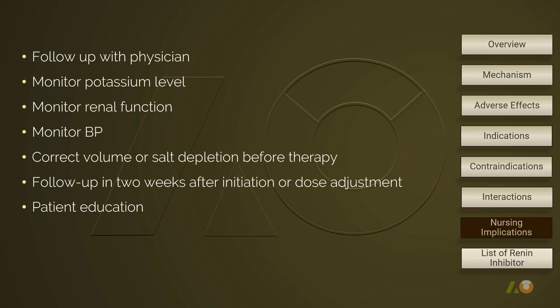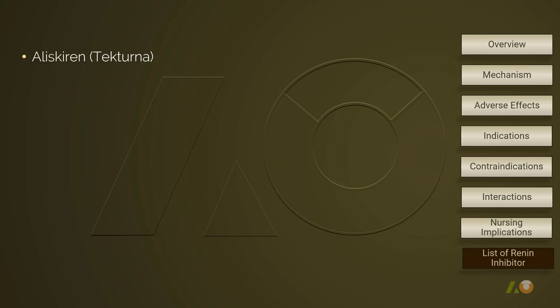Here are highlights of nursing care for patients taking alaskirin. Follow up with the physician on a regular basis. Teach the patient that medication will take effect two weeks after initiating or adjusting dosage. Patients should report to the physician if experiencing swelling of the face or neck, and should call 911 if having difficulty breathing. Although angioedema is rarely reported, the patient should still be educated about it and treated immediately. Renal function should be monitored regularly. Monitor blood pressure, especially when the patient takes a combination of multiple antihypertensive medications. Teach the client on monitoring and reporting adverse effects experienced. Alaskirin is the only direct renin inhibitor available.